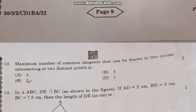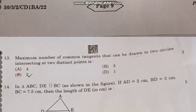Question number 13: Maximum number of common tangents that can be drawn to two circles intersecting at two distinct points is correct answer option C, 2.